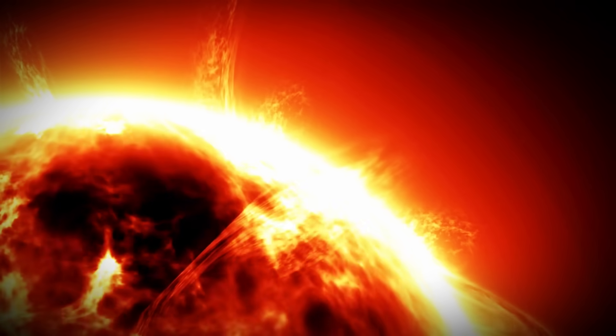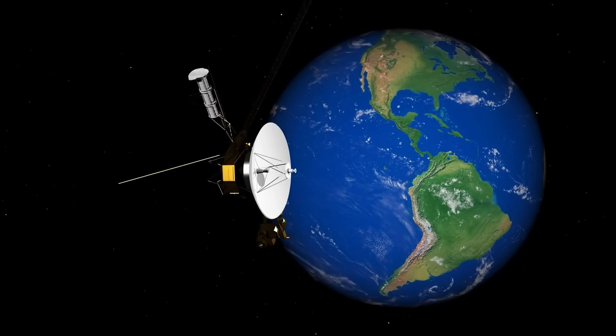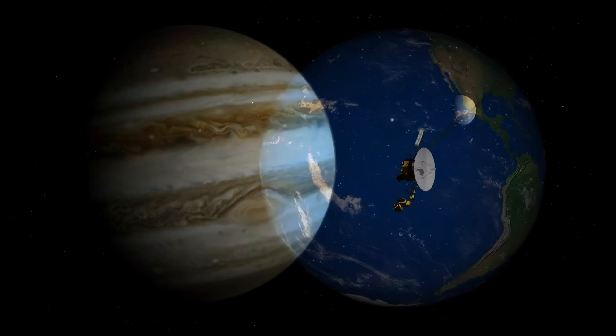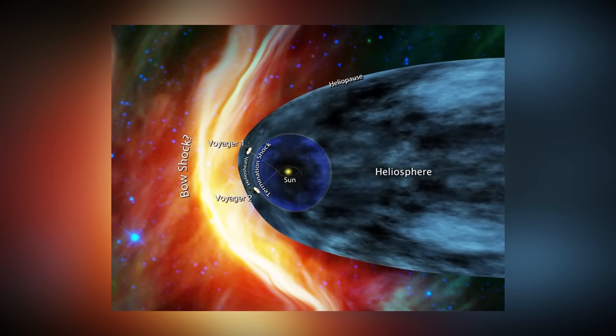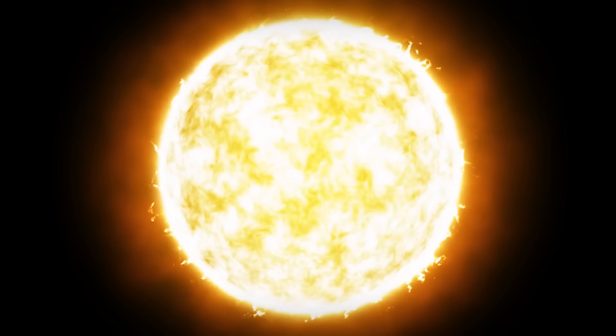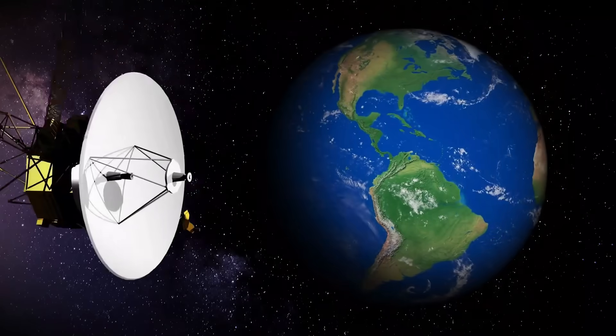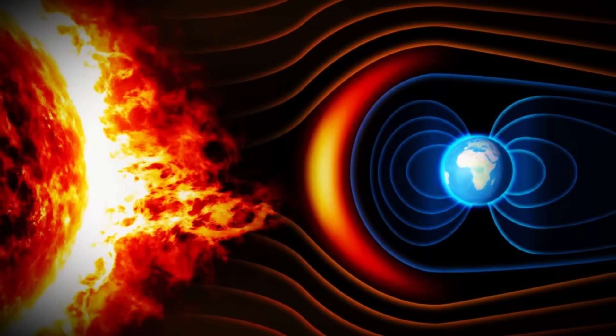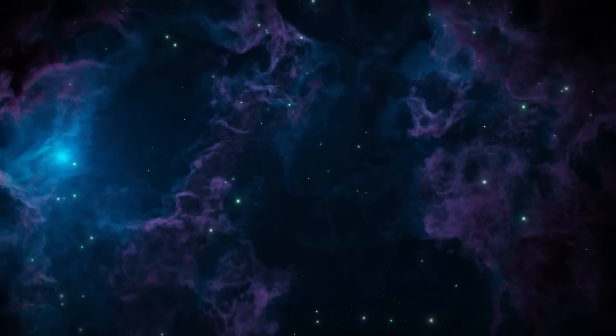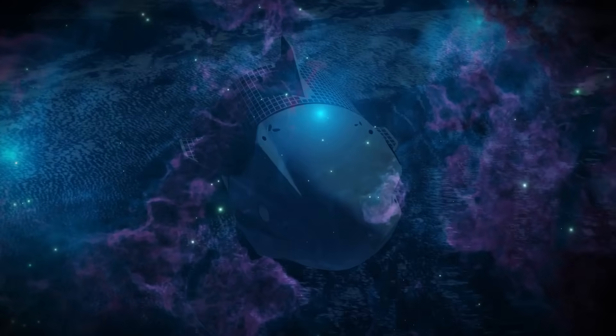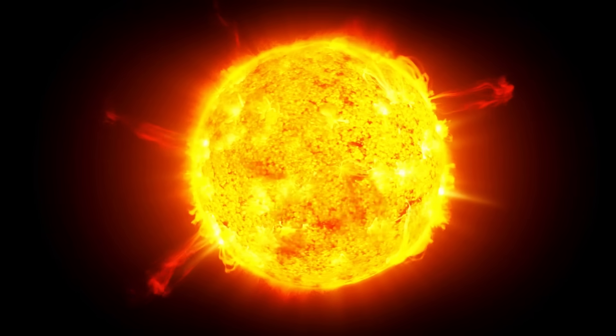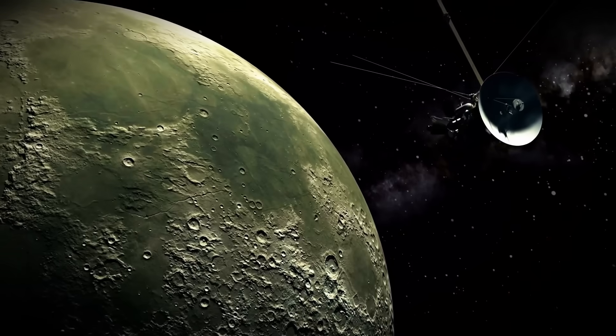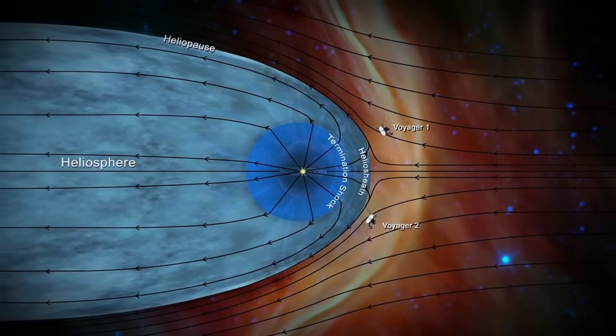In November 2018, Voyager 2 crossed the heliopause for the second time after its twin, Voyager 1. Voyager 2 saw a dramatic decrease in solar wind particle density and an increase in interstellar particle density when it passed this limit. This verified that the spacecraft had left the heliosphere, the bubble-like area where the sun's effect is most noticeable.